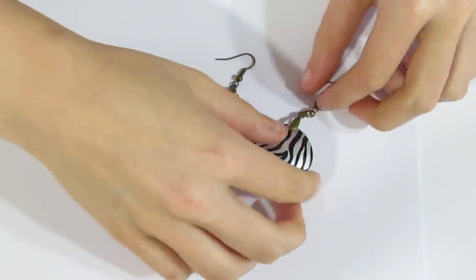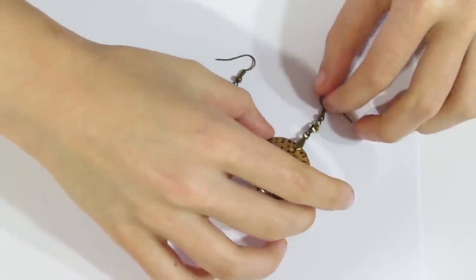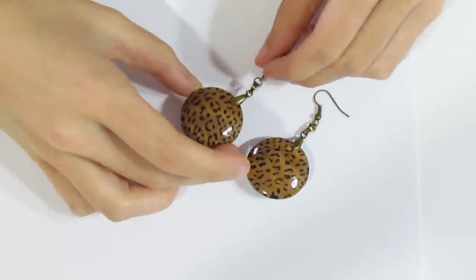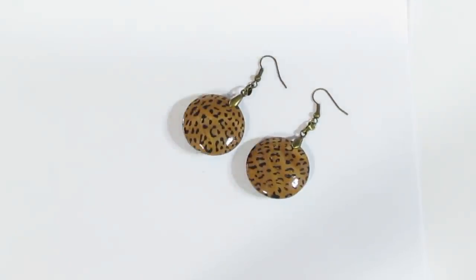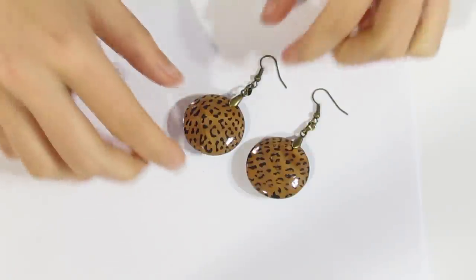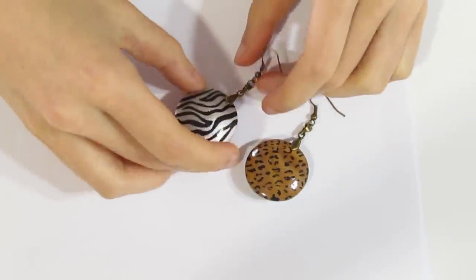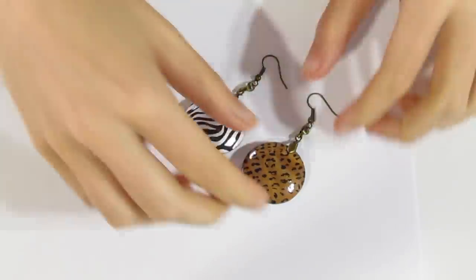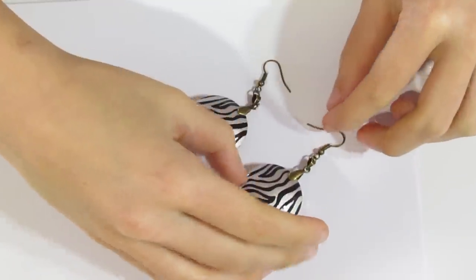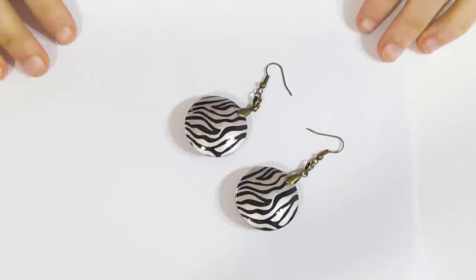I personally prefer the zebra side the most, but both sides look nice. And you could wear them like that as well. You can mix and match if you wanted. But personally, I do prefer the zebra side the most. So anyway, if you enjoyed today's tutorial, please do let me know in the comments below.